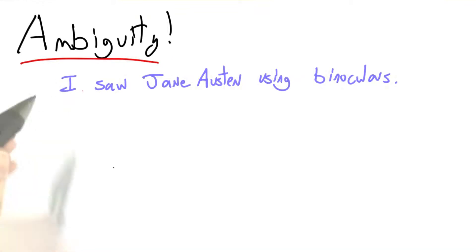One trait shared by programming languages and natural languages is ambiguity. Consider this sentence: I saw Jane Austen using binoculars.